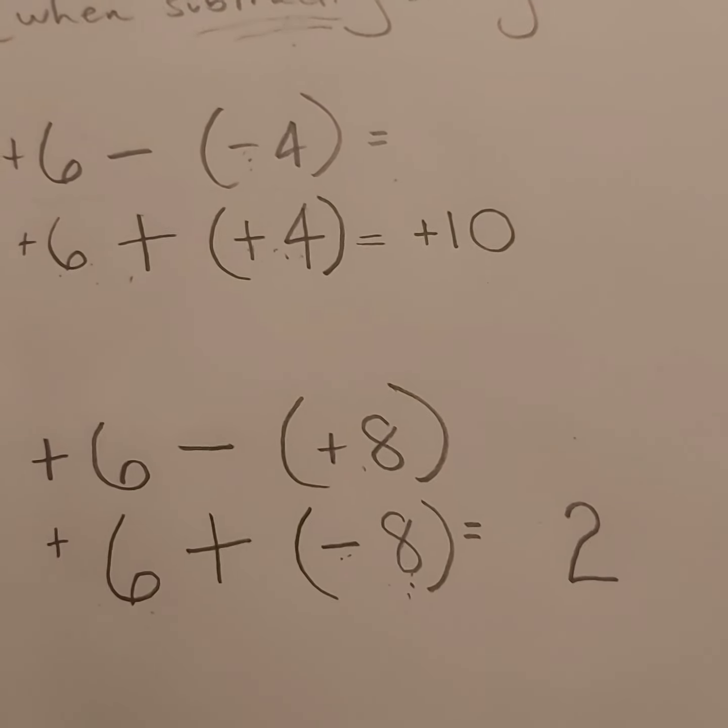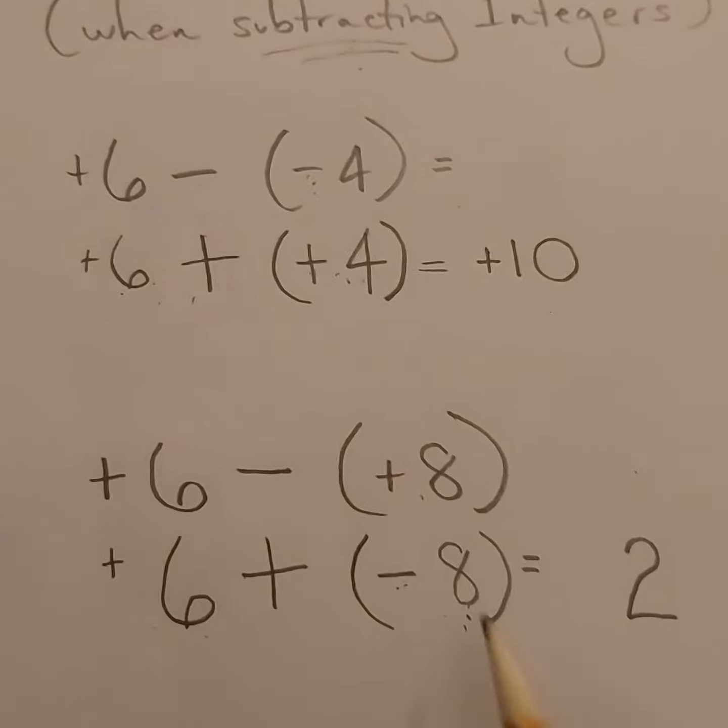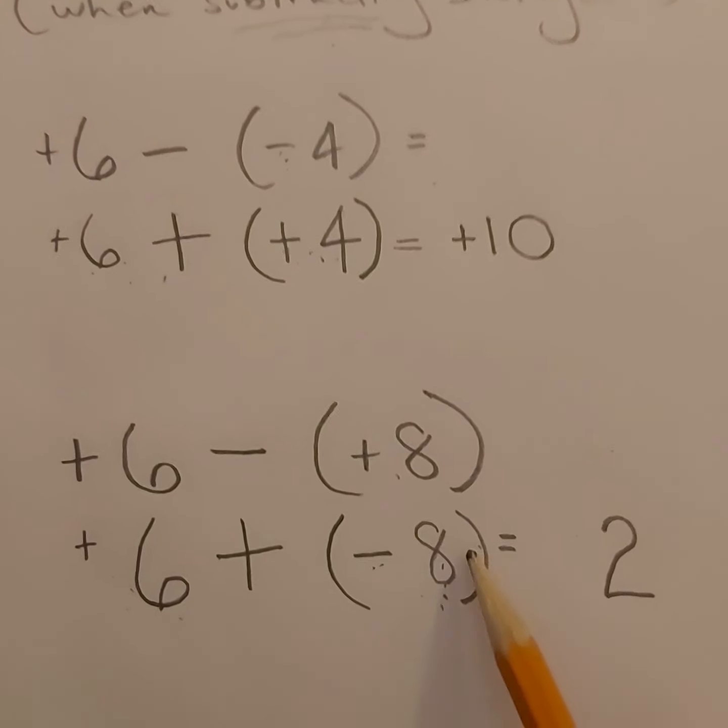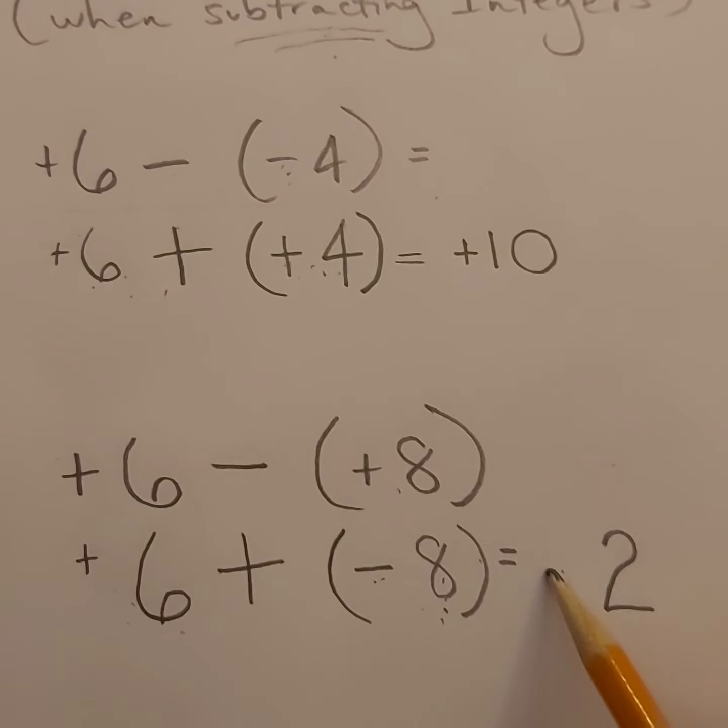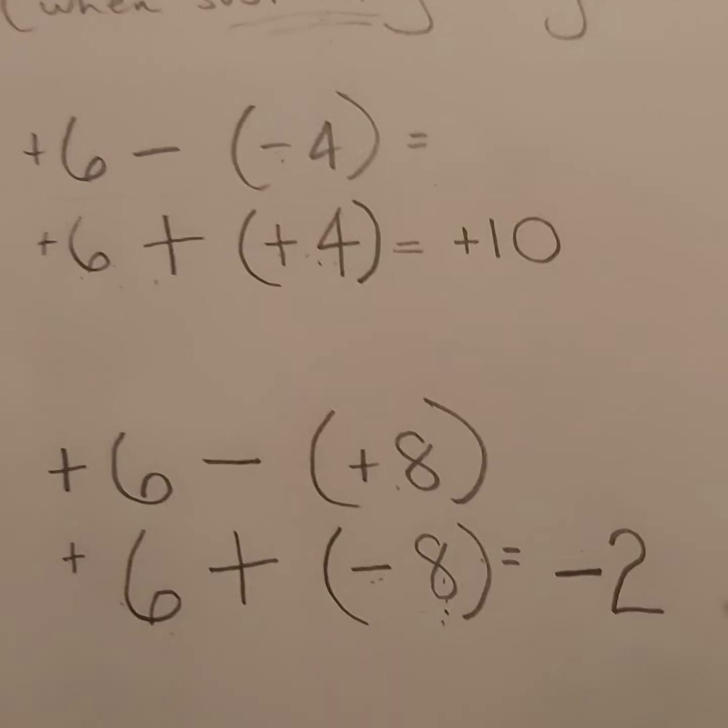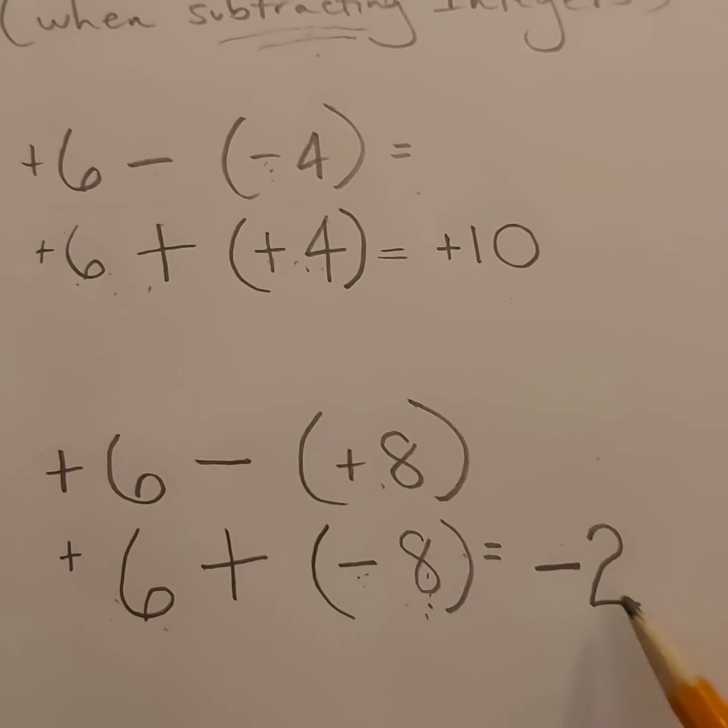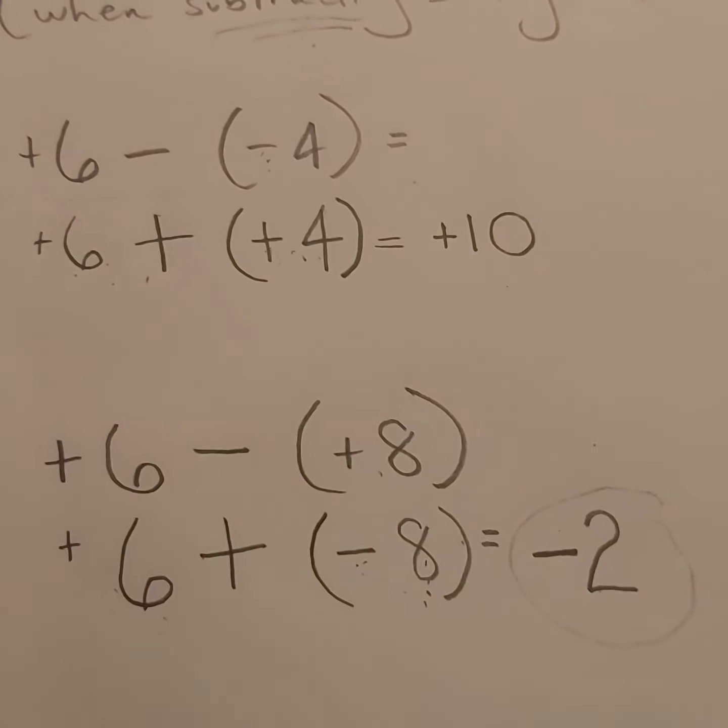And now how do I know what the sign is? Well, whichever one of these numbers is the larger number, take that sign. So in this case, eight is the larger number, and eight is negative. Therefore, my answer is going to be negative.